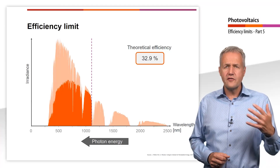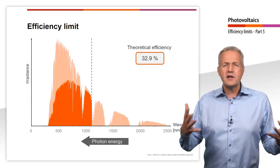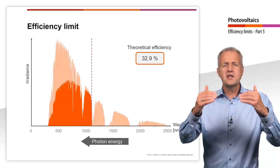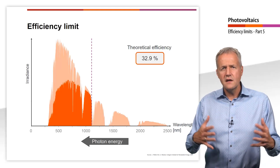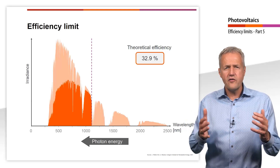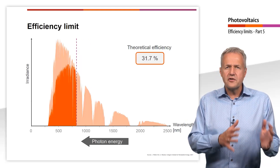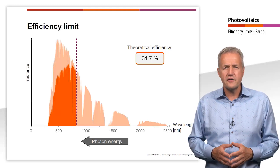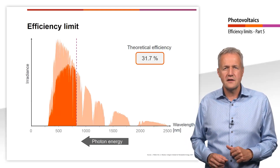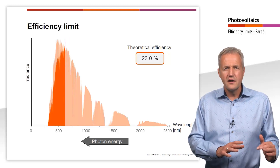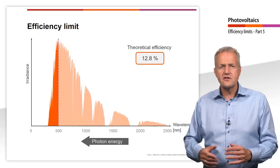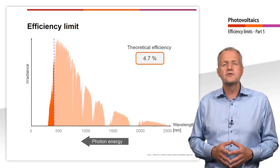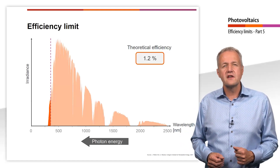So far, we have looked exclusively at silicon as a semiconductor material. But what about semiconductors with other band gaps? With a larger band gap, the photons need more energy to lift electrons into the conduction band. In the spectrum, this becomes clear by the fact that the cutoff wavelength becomes smaller. This decreases the number of photons contributing to the photoelectric effect. However, since more energy is now required for the photoelectric effect, the thermalization losses decrease at the same time. As the band gap becomes larger, a larger portion of the radiation is transmitted. In the extreme case of a very large band gap, almost all the energy is lost due to transmission losses and the theoretically possible efficiency is only a few percent.